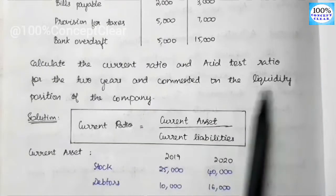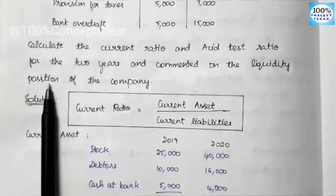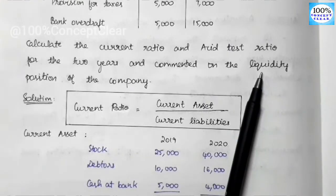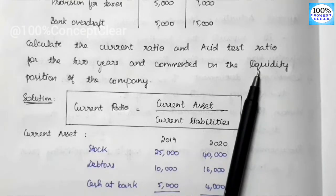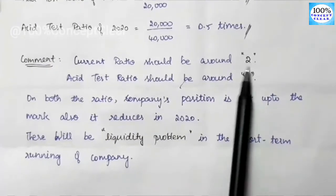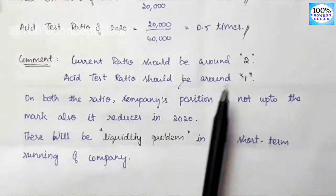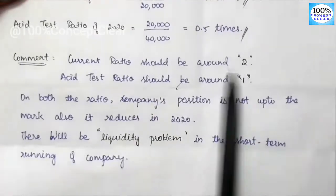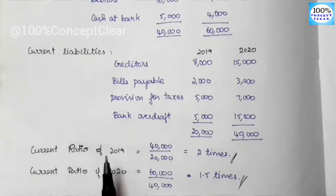The next question is to comment on the liquidity position of the company. We will check the ratios to see how the business stands in terms of liquidity position. Liquidity position refers to how much cash the business has. The asset test ratio being at 1 means the liquidity position is correct in the business. The current ratio of 2 also confirms the liquidity position is correct and positive.